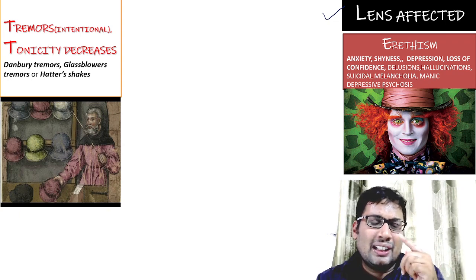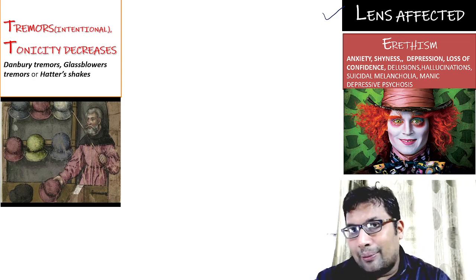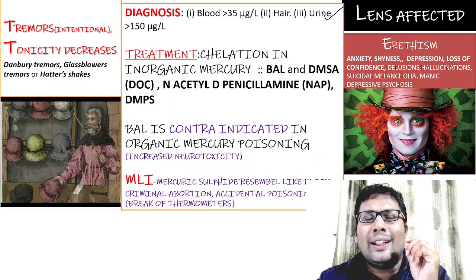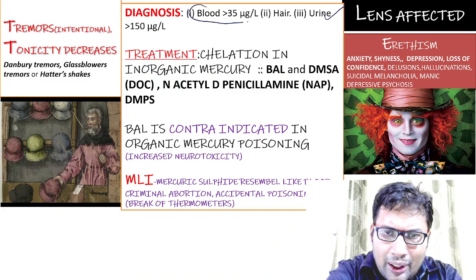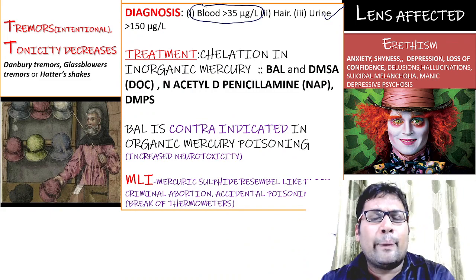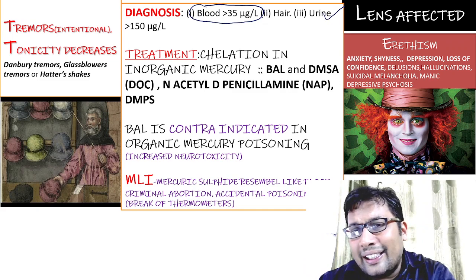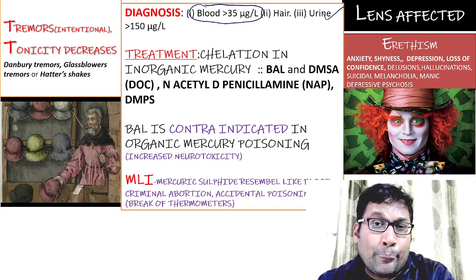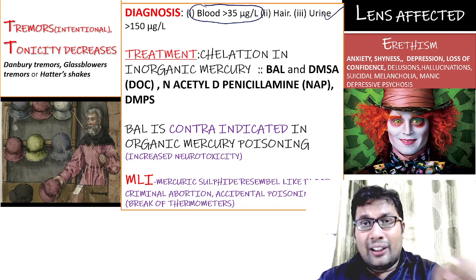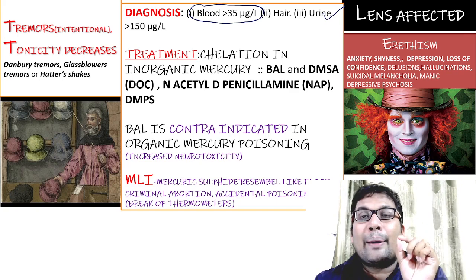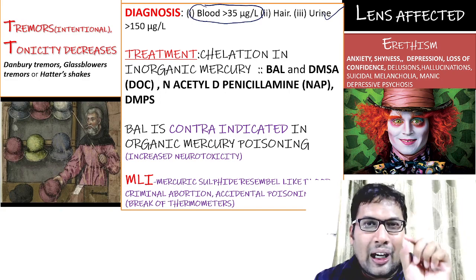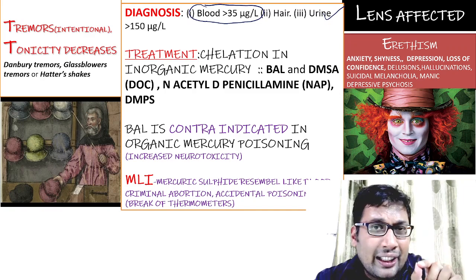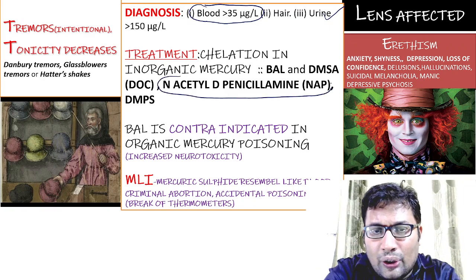For diagnosis, measure levels of mercury in the blood — when it is more than 35 micrograms per liter, or in the presence of mercury in the hair, or urine more than 150 micrograms per liter — then you can conclude mercury poisoning along with clinical features. Treatment: as with all heavy metal poisoning, chelation therapy is given. The drug of choice is BAL given along with DMSA. You can also give N-acetyl-D-penicillamine, also known as NAP.